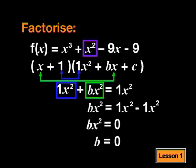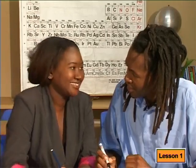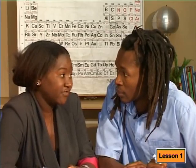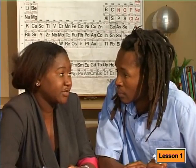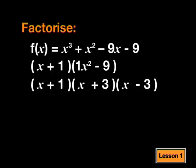Is that right? Yes, that's right. And substituting b equals 0 into the quadratic gives us the difference of two squares. x squared minus 9 factorizes into x plus 3 and x minus 3.